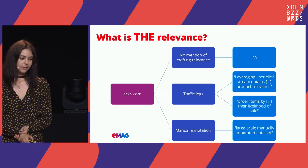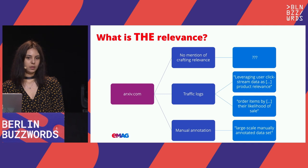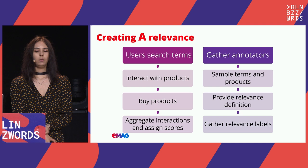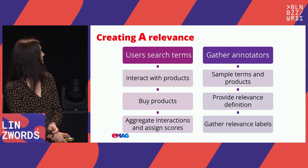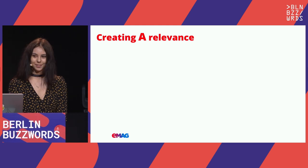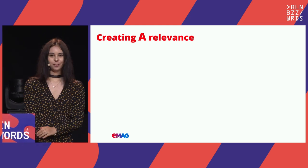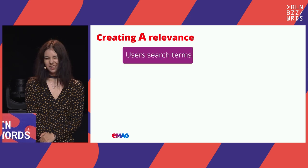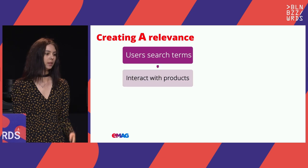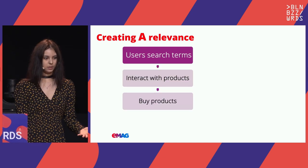So it seems like we cannot really agree on one definition of relevance. But can we define relevance? If we are to follow the first usable definition of relevance using traffic logs, then that's very easy — the users do most of the work. They search terms on our website, they interact with products, and might even buy a subset of the products that they interact with.